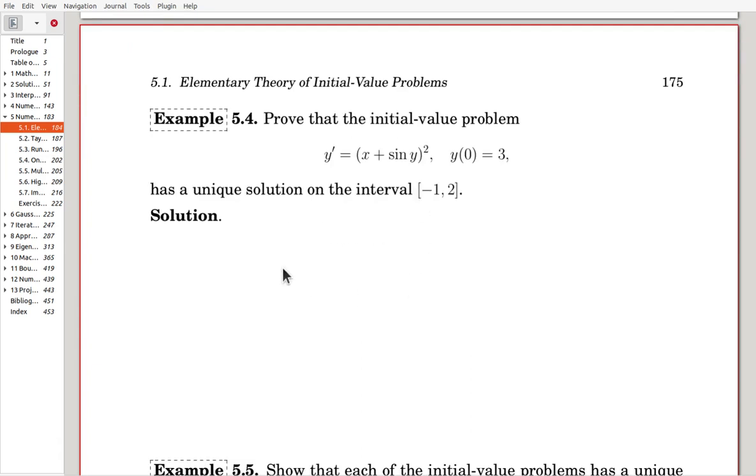Let's see this example. Prove that the initial value problem has a unique solution on the interval minus 1 to 2. For this problem, now, here, f is continuous.